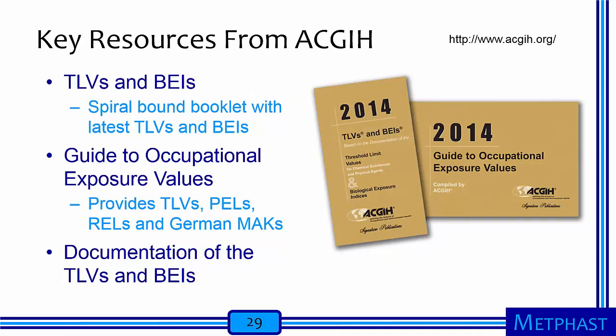There are several key resources from ACGIH published each year. The first is a spiral-bound booklet with the latest threshold limit values and BEIs — biological exposure indices. The second is a guide to occupational exposure values, which in addition to TLVs provides permissible exposure limits, recommended exposure limits, and German standards — having all these values side-by-side is helpful for setting internal workplace OELs. The last is documentation of the TLVs and BEIs, which is extremely useful: for each substance, it explains how the committee decided on the particular value, including where the substance is used in industry and a summary of the epidemiological and toxicological information upon which the value is based.